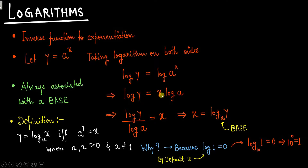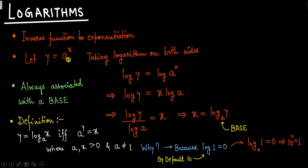So this can be written as log y equals to x times log a. Bringing log a across, we get log y divided by log a equals to x. Therefore x equals to log y to the base a. Initially it was y equals to aˣ, and this has been converted into x equals to log y to the base a.